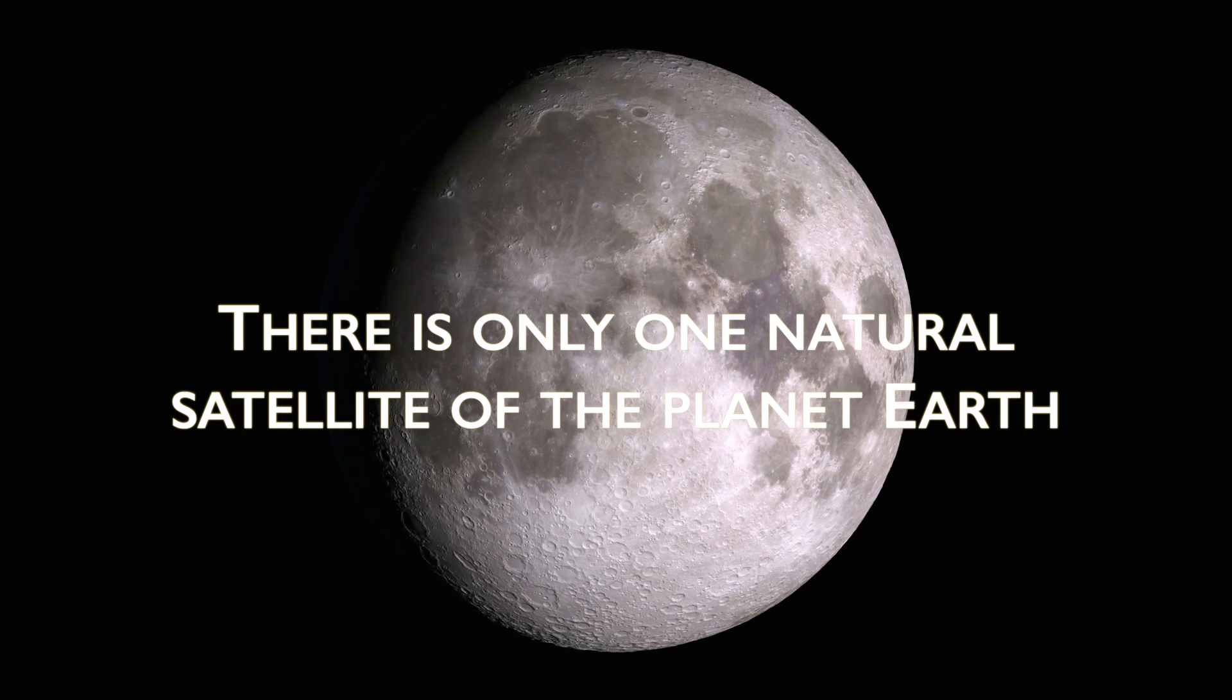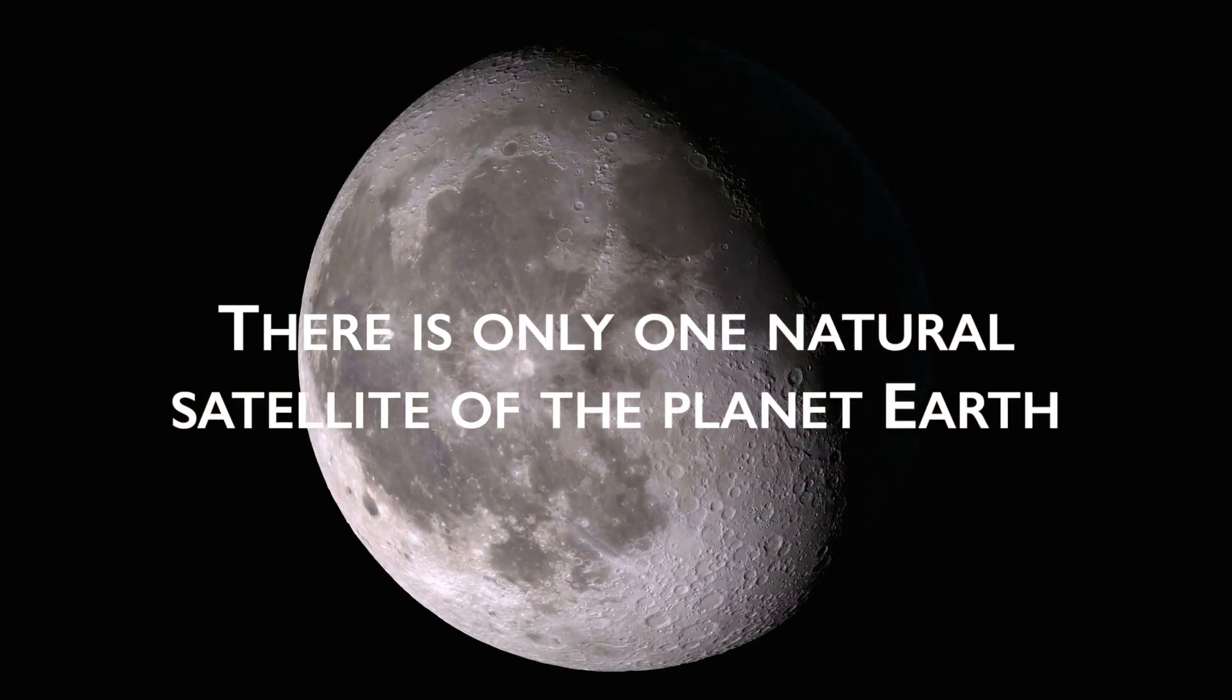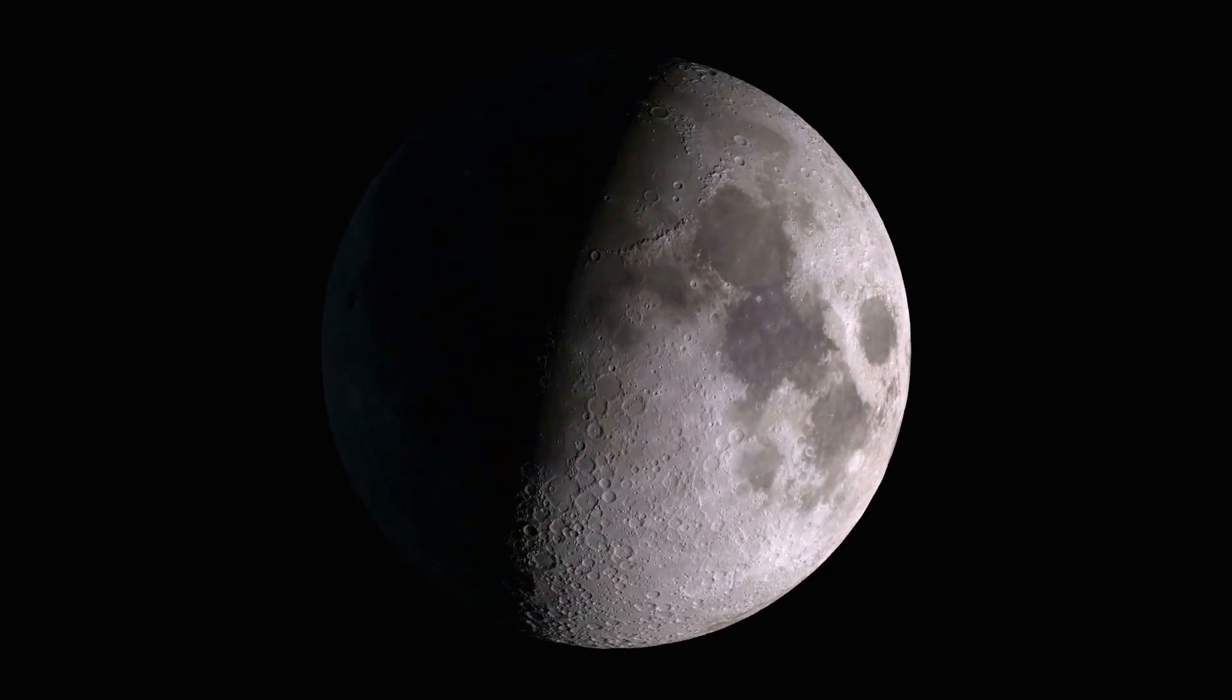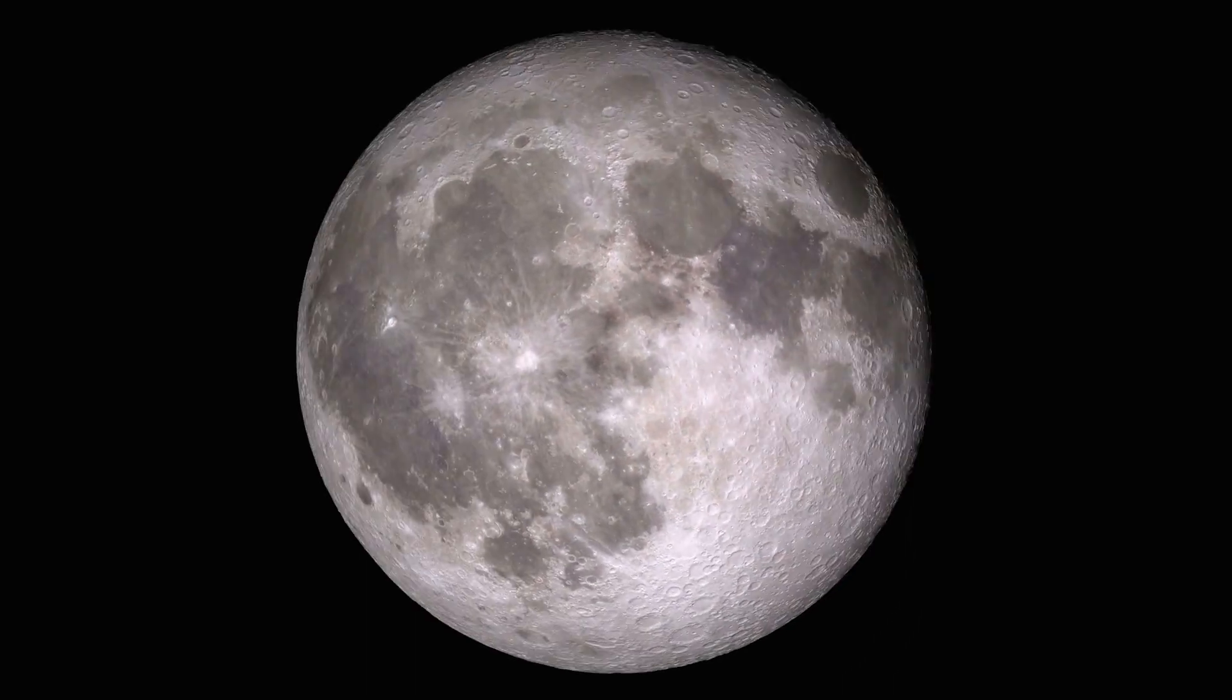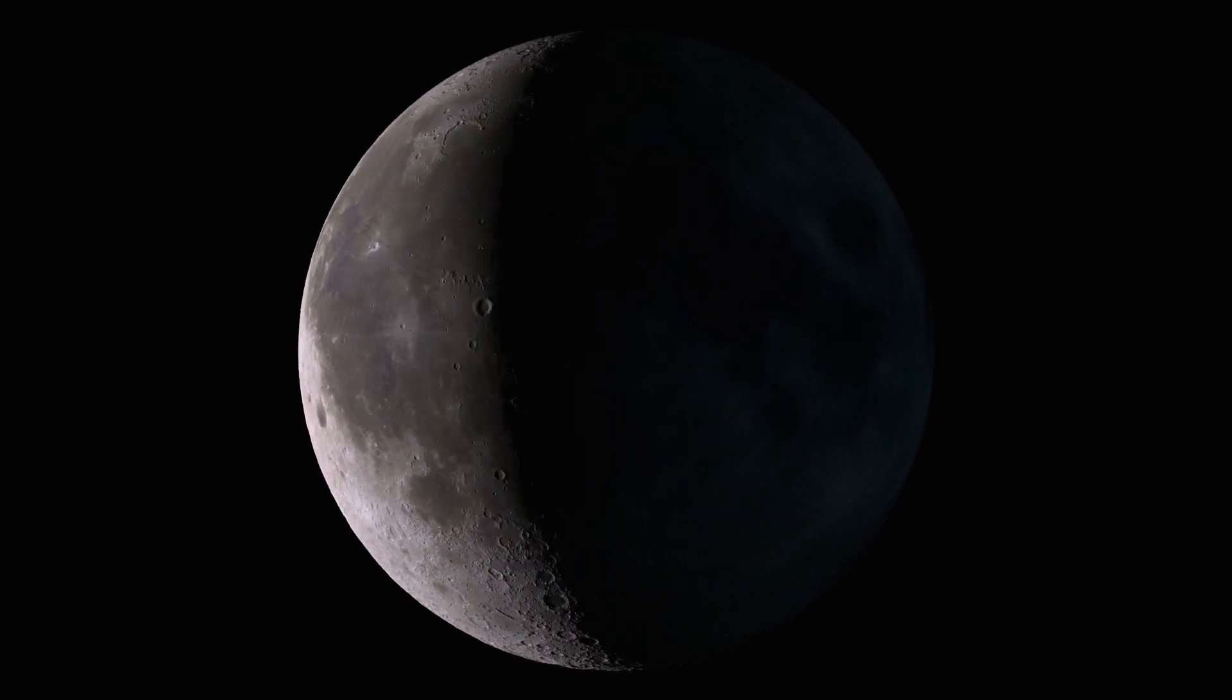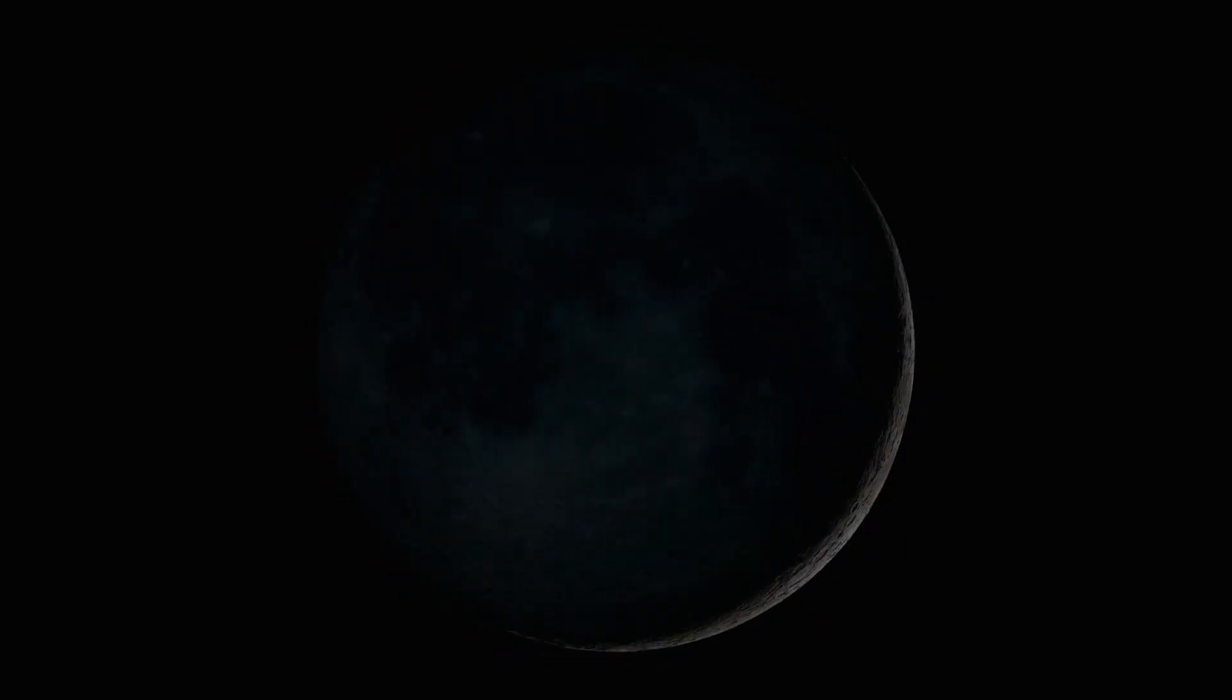There is only one natural satellite of the planet Earth. As a percentage of the size of the body it orbits, the Moon is the largest satellite of any planet in our solar system. In real terms, however, it is only the fifth largest natural satellite.